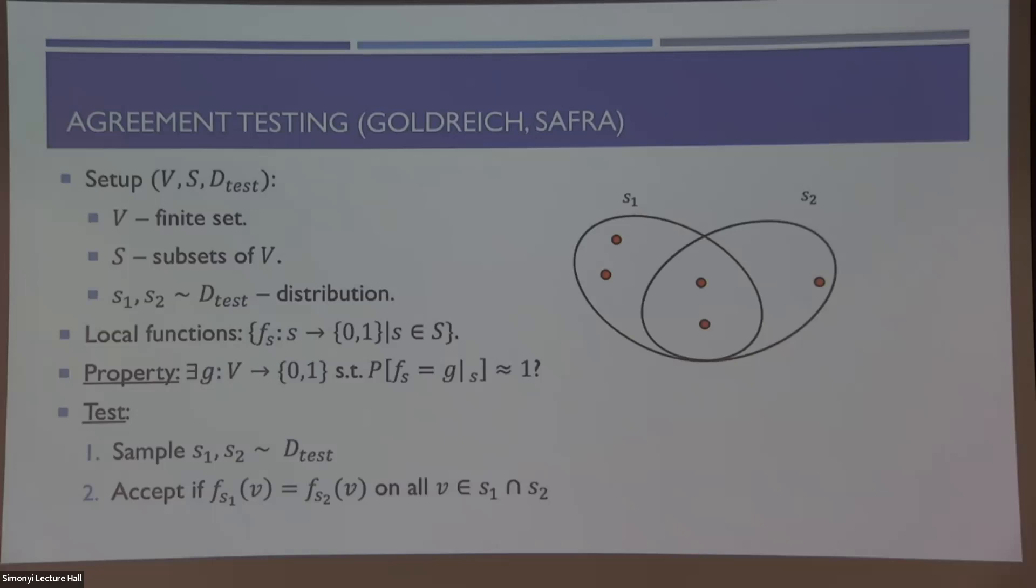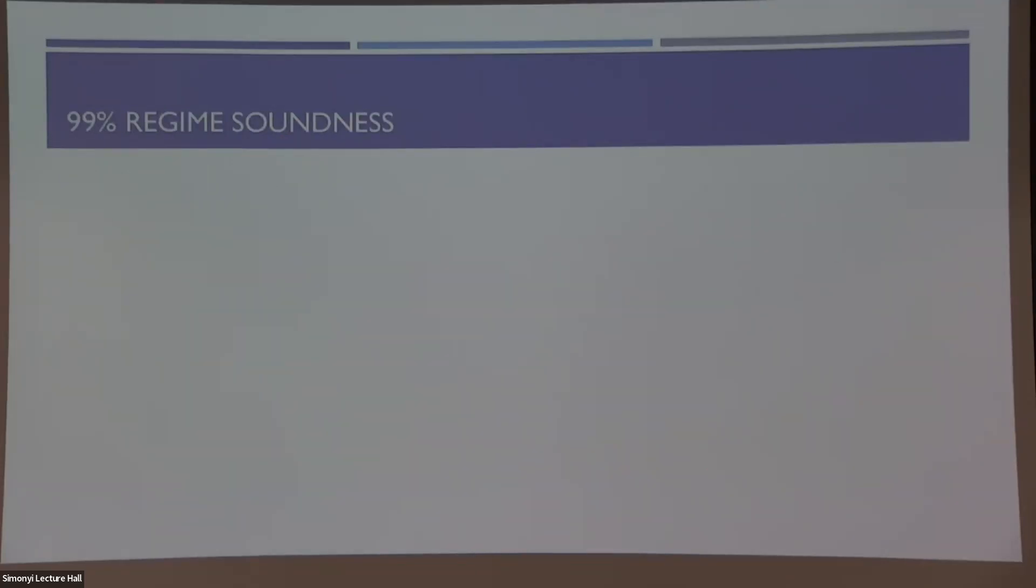So we consider the following test where we randomly sample a pair of sets according to the pre-specified distribution. And we say yes, or the test accepts if the two local functions corresponding to these sets agree, namely assign the same values to all the vertices in the intersection of the two sets.